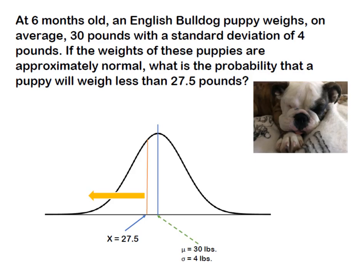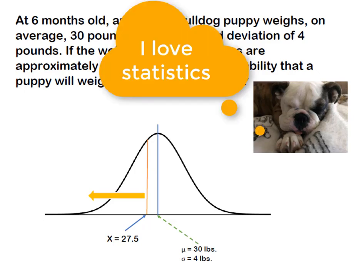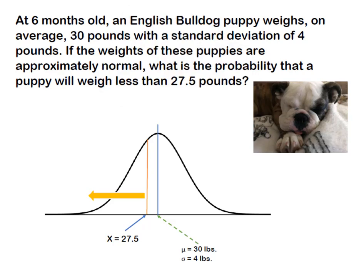At six months old an English Bulldog puppy weighs on average 30 pounds with a standard deviation of 4 pounds. If the weight of these puppies are approximately normally distributed, what's the probability that a puppy will weigh less than 27 and a half pounds?